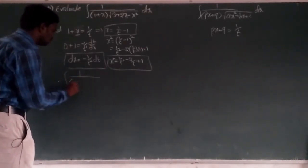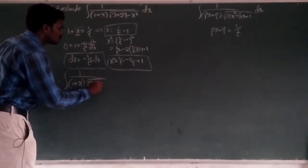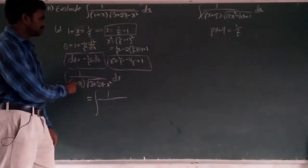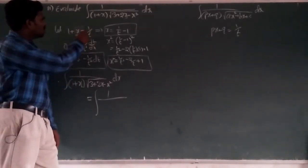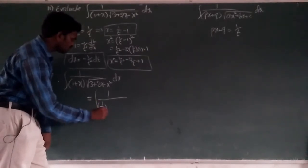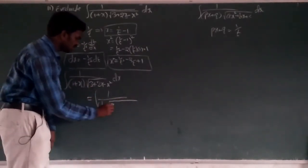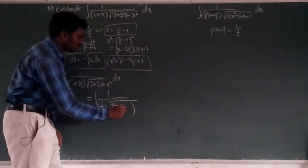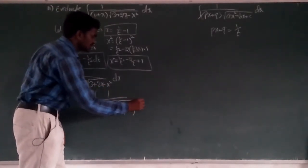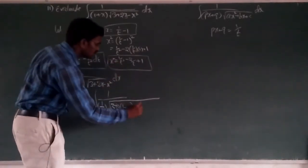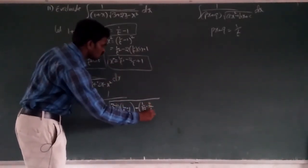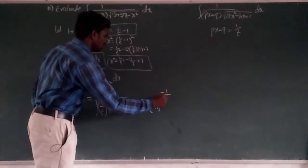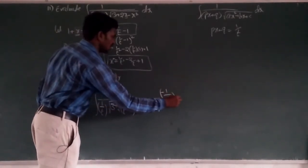Therefore, the integration of 1/((1 + x) · √(3 + 2x − x²)) dx will be: 1 + x means 1/t. So: 1/t × 1/√(3 + 2x − x²). Here, x means 1/t − 1, and x² means 1/t² − 2/t + 1. And dx means −1/t² dt.